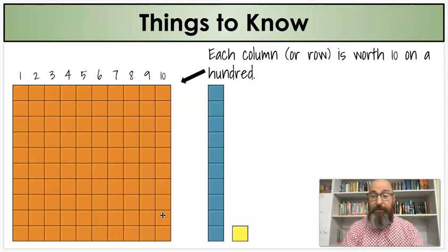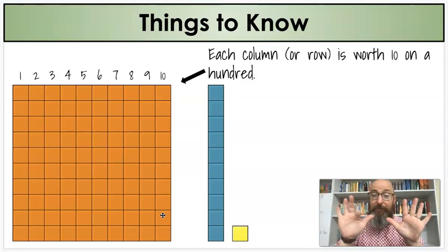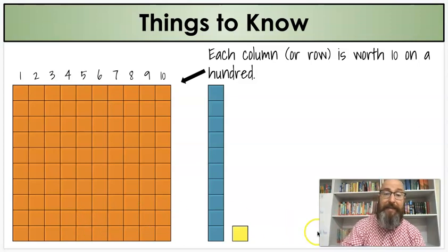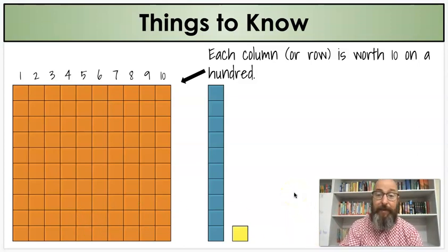So ten of these equals one of these. If you need to know how that feels, you can take ten fingers, just like ten of these, and you can count by tens. Ten, twenty, thirty, forty, fifty, sixty, seventy, eighty, ninety, one hundred. So if you're counting by tens, ten tens make a one hundred.